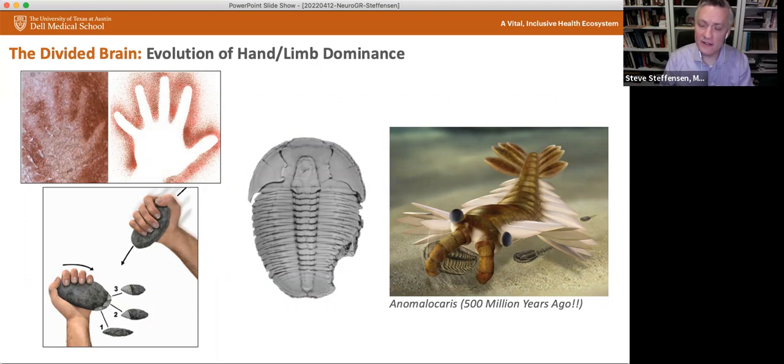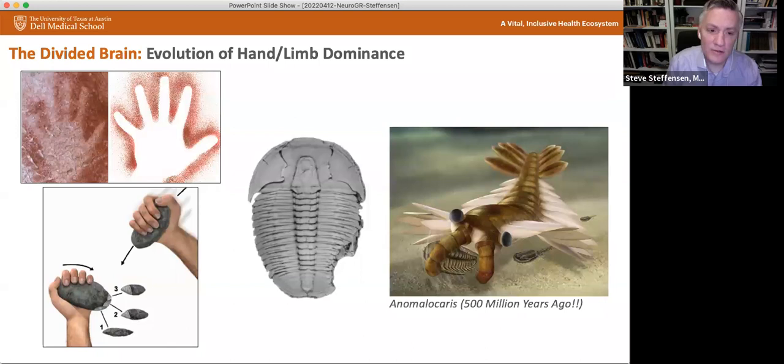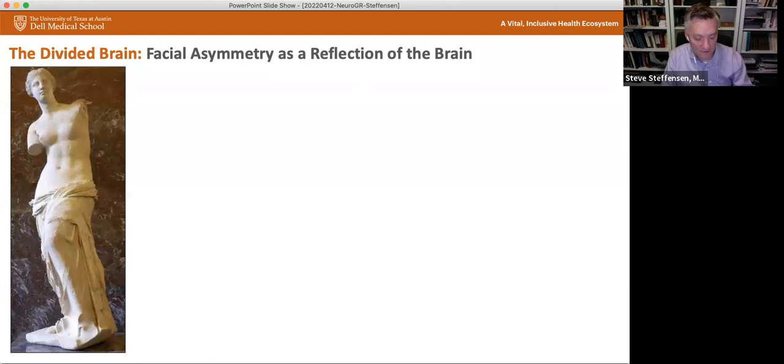In fact, in Kansas, they started discovering these trilobites that seem to have these right sided bite marks in them. And one of the predators at the time had these two arm-like protrusions. And it was postulated, this was over 500 million years ago at the dawn of sort of time, that there was handedness as far as 500 million years ago. And in fact, lateralization of nervous system structures dates back even farther to some of the most primitive life forms show a lateralization of dominance in neural networks and neural organization dating back 700 million years.